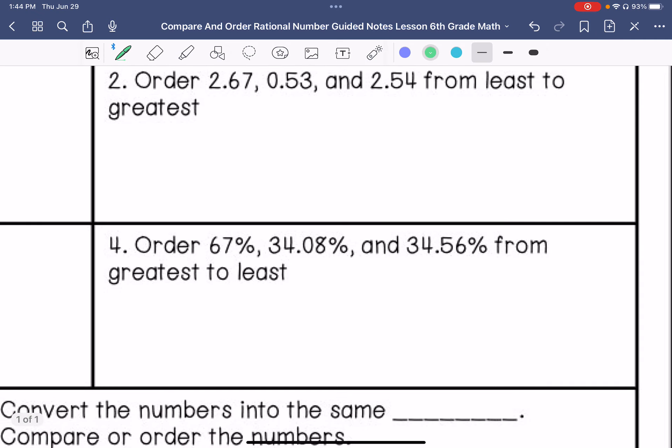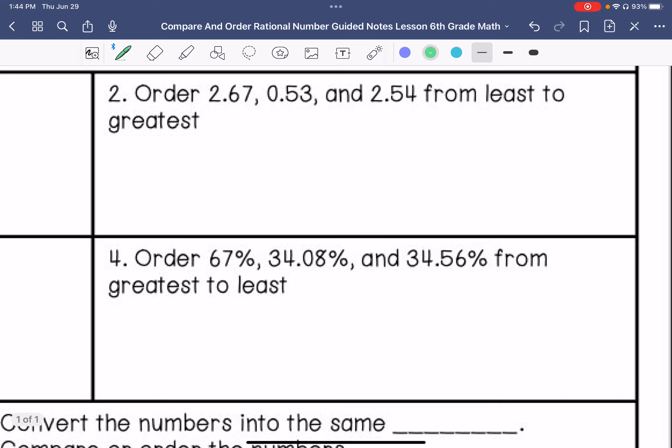Number two, order two-point-six-seven, zero-point-five-three, and two-point-five-four from least to greatest. I'm going to line them up. So I'm going to start with the largest place value, so the two-point-somethings are greater. So my least is zero-point-five-three. I'm going to cross that one out. And we're going to compare these, six is greater than five. So if we're doing least to greatest, that would be two-point-five-four, and then two-point-six-seven.